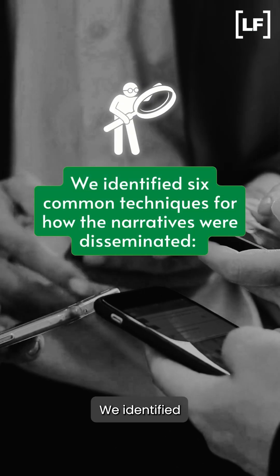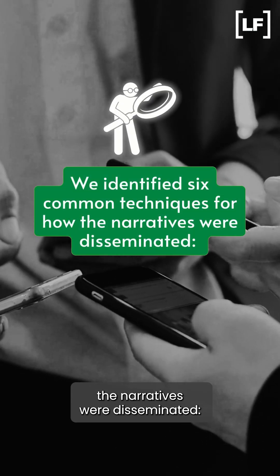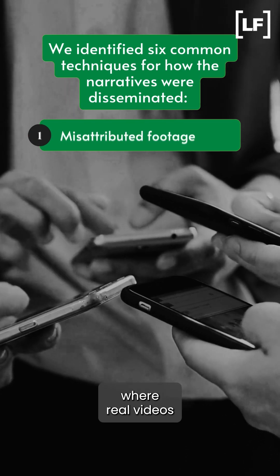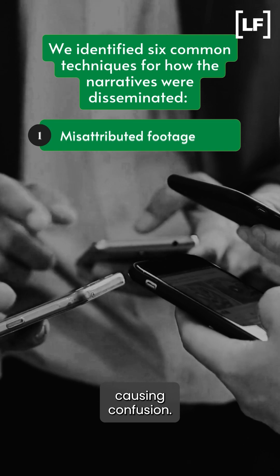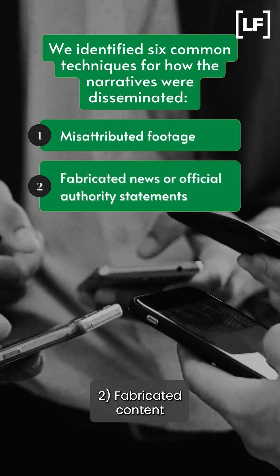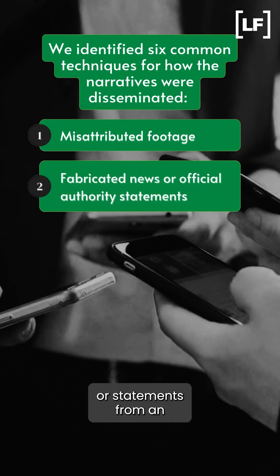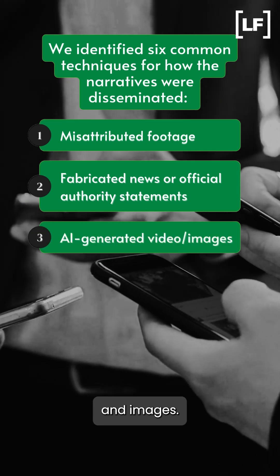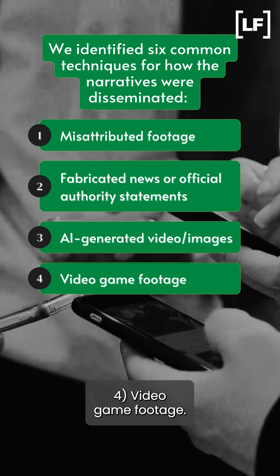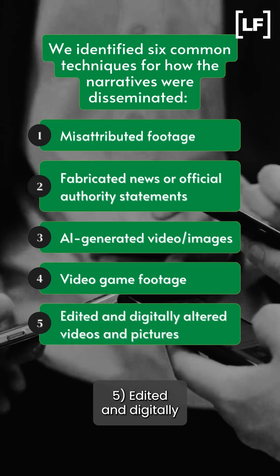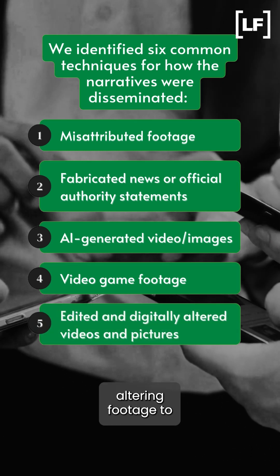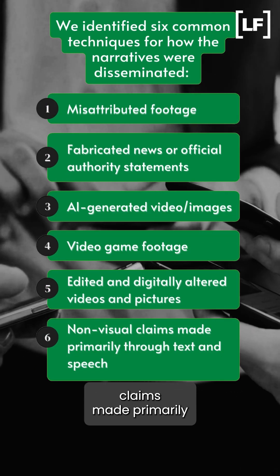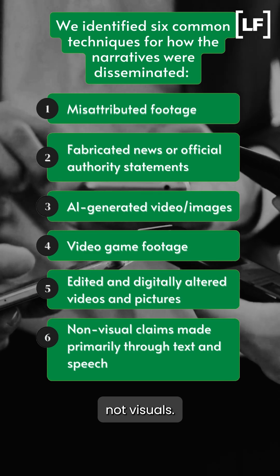We identified six common techniques for how the narratives were disseminated. One, misattributed footage where real videos are incorrectly labeled causing confusion. Two, fabricated content impersonating authentic news or statements from an official authority. Three, AI-generated video and images. Four, video game footage. Five, edited and digitally altered videos and pictures, altering footage to change context or meaning. Six, non-visual claims made primarily through text and speech, not visuals.